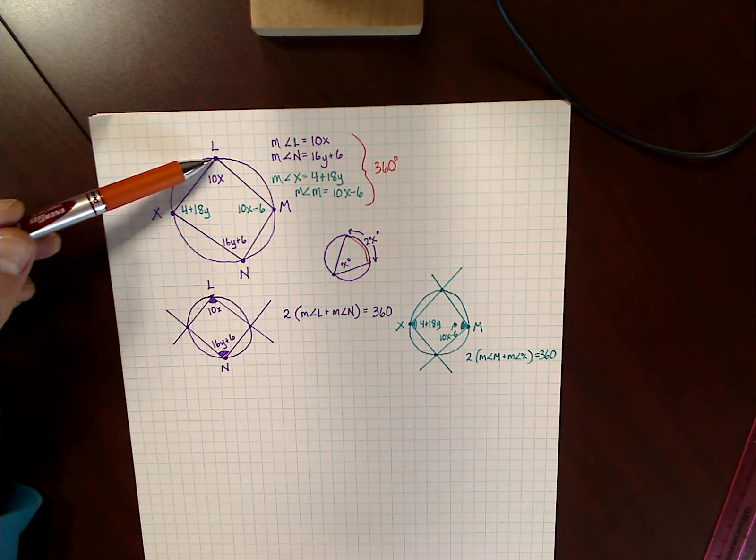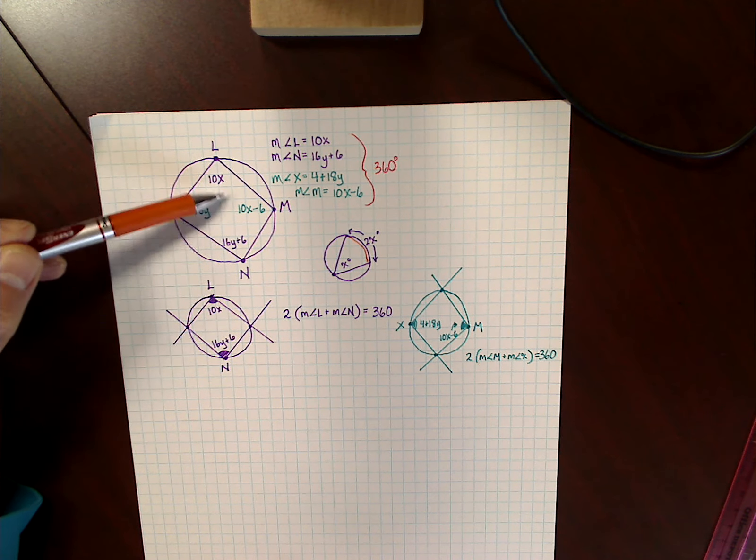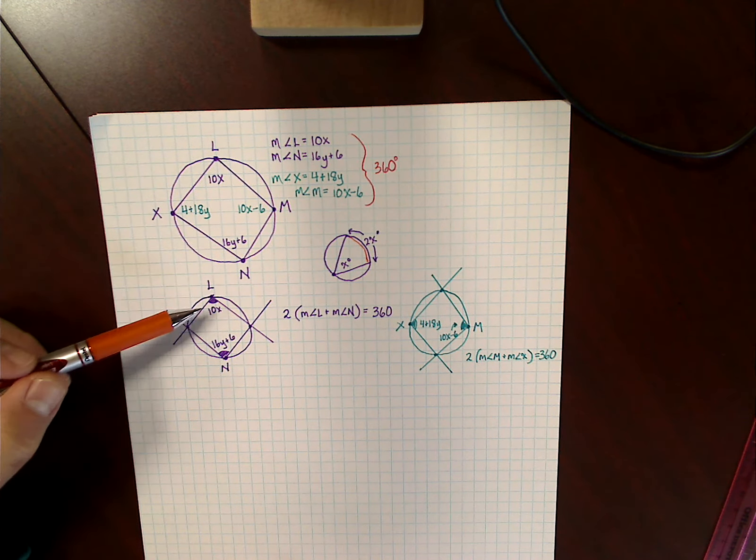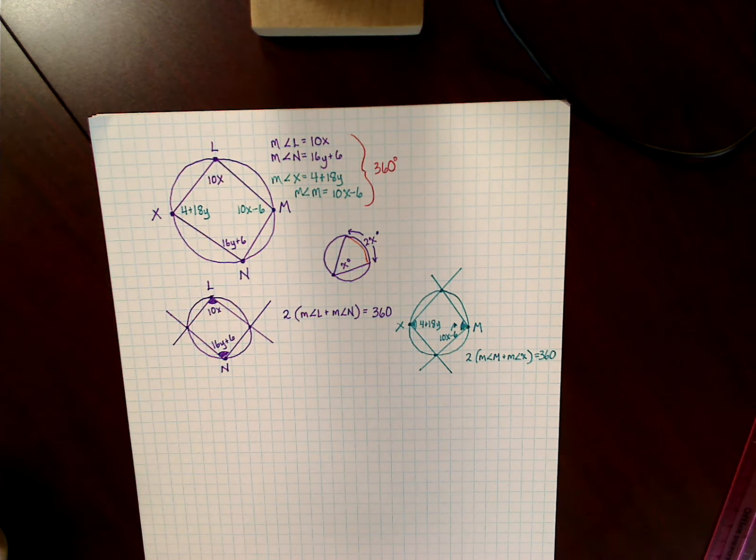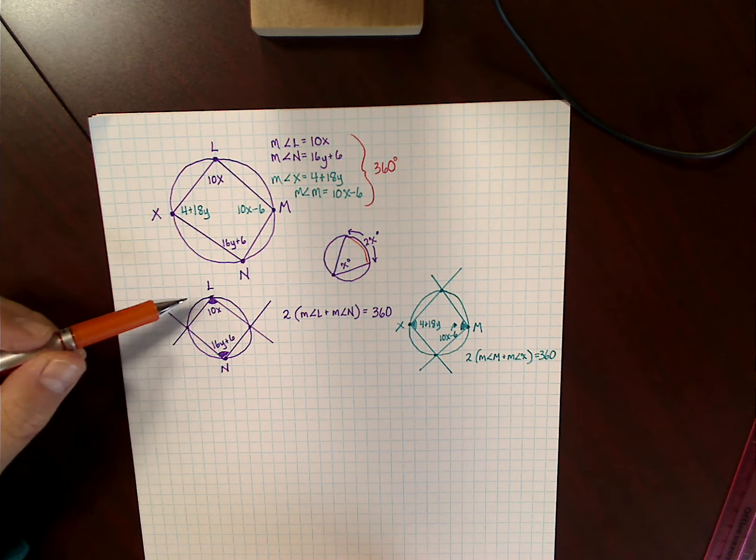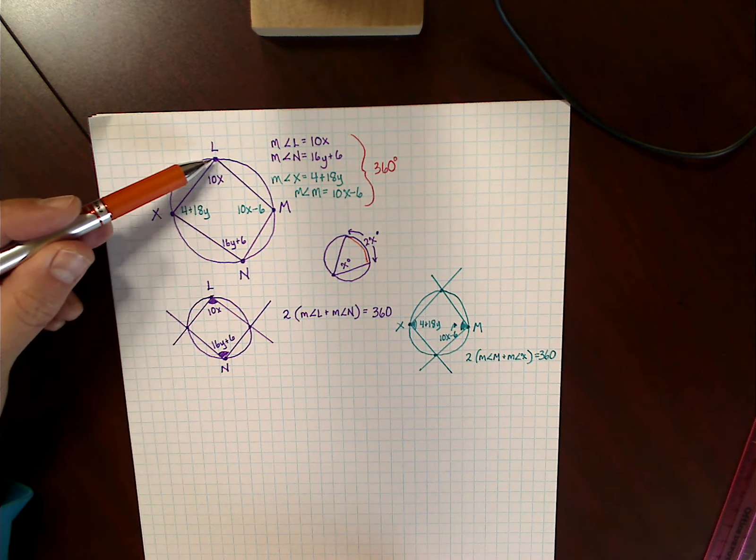In a problem like this, you're asked to find X and Y, and you've got to look at the opposite angles. Because they're going to intercept the entire circle, and the entire circle is 360 degrees. So if you look at these two angles, L and N, they're opposite of each other.